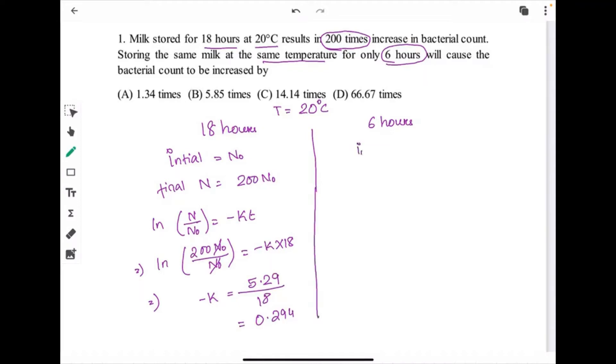In this case, let's take initial be N0. Final, we don't know. We have to find this, how many times. That is X of N0, right? So, ln(N/N0) equals minus KT. So ln(X into N0) divided by N0 equals minus K into 6 hours. lnX equals minus K. We know 0.294, so 0.294 into 6, and we have to remove this ln. X equals e to the power 1.766.